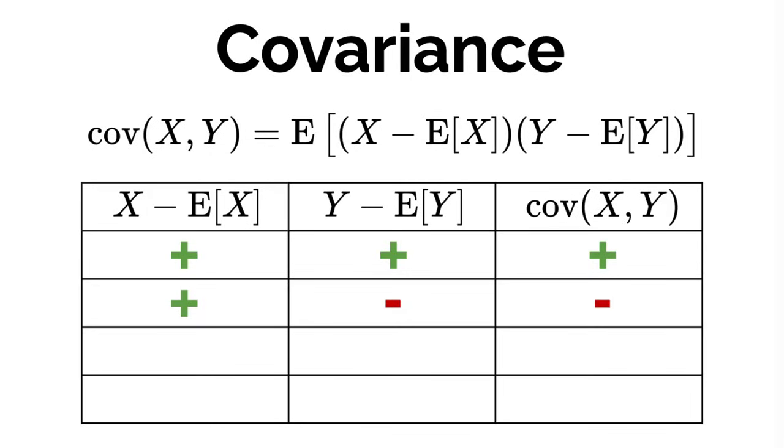Then, if we assume that we expect x to be less than its mean, and y to be greater than its mean, then we would end up again with a negative covariance. Finally, if we expect both x and y to be less than their mean, because we have a negative sign on both parentheses, we would end up with a positive covariance.